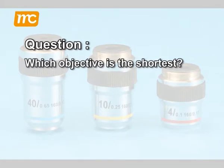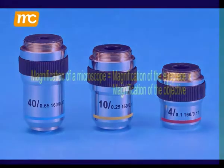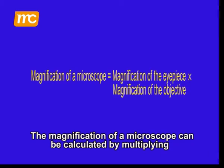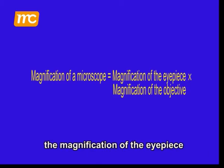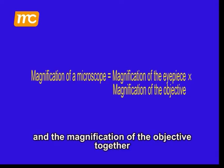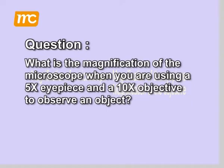The magnification of a microscope can be calculated by multiplying the magnification of the eyepiece and the magnification of the objective together. What is the magnification of the microscope when you are using a 5 times eyepiece and a 10 times objective to observe an object?